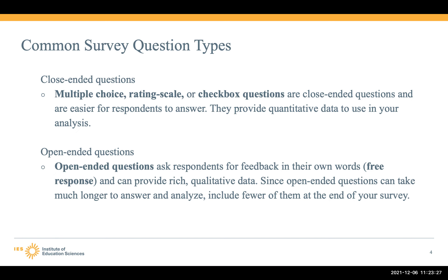There are two types of common survey question types. Closed-ended questions — such as multiple choice, rating scales, or checkboxes — are easy for respondents to answer and, if well-written, provide rich quantitative data for you to analyze and share. Open-ended questions ask respondents for feedback in their own words, often called free response, and can provide very rich qualitative data. However, since open-ended questions take much longer to answer and to analyze, we suggest you include fewer of them and put them at the end of the survey.